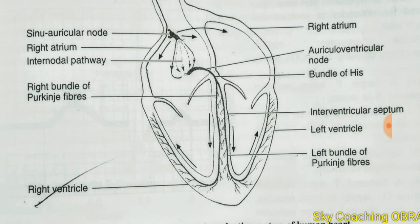The center of the ventricular wall is supplied by the bundle of His, which runs through the interventricular septum. This gives rise to the right bundle of Purkinje fibers and the left bundle of Purkinje fibers.